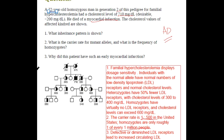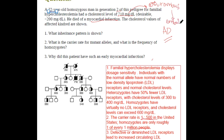Why did this patient have such an early myocardial infarction? There is an increased cholesterol level in these patients, which favors the formation of thrombus, which may lead to emboli. This can obstruct the vessels in the heart, leading to myocardial infarction. Thank you for watching.